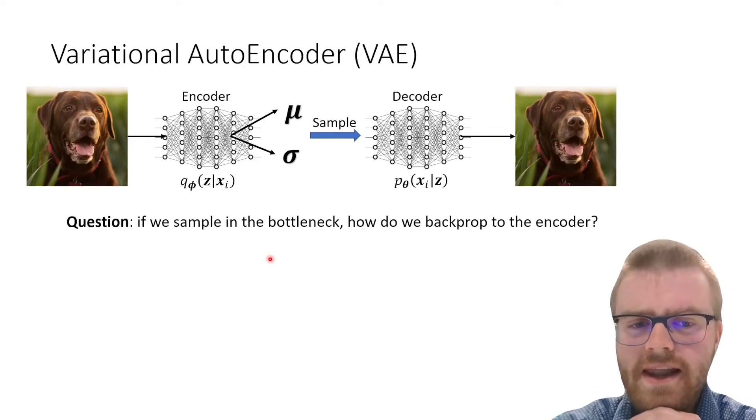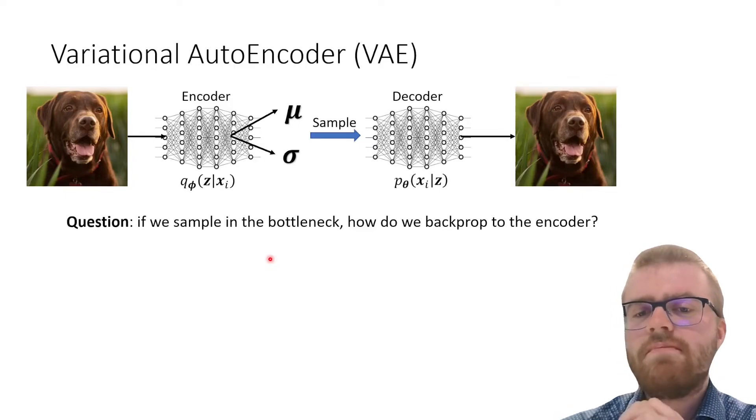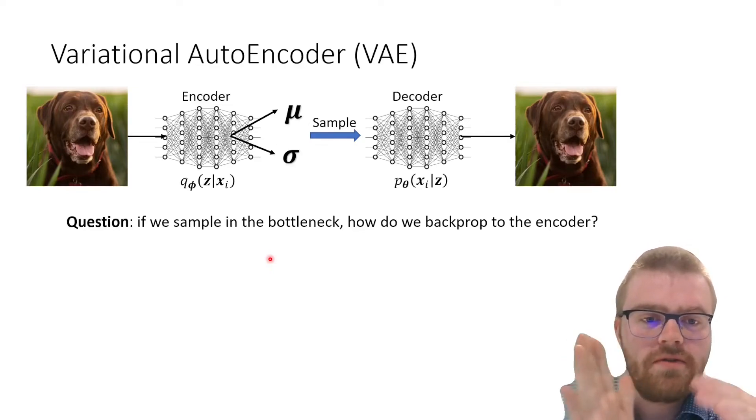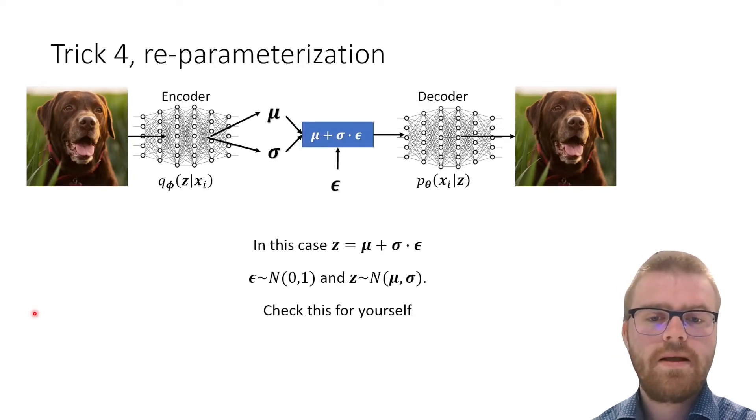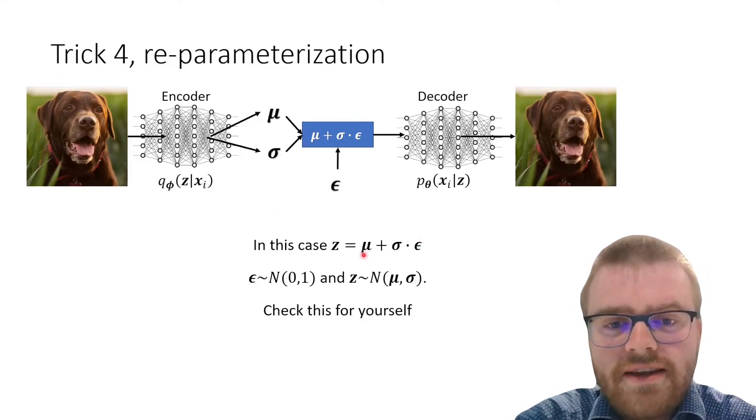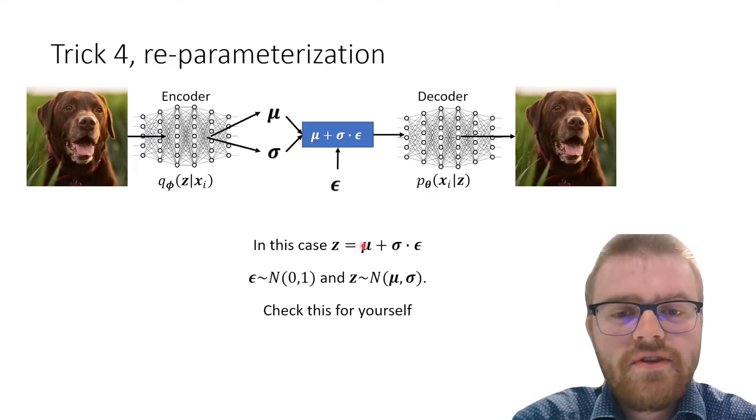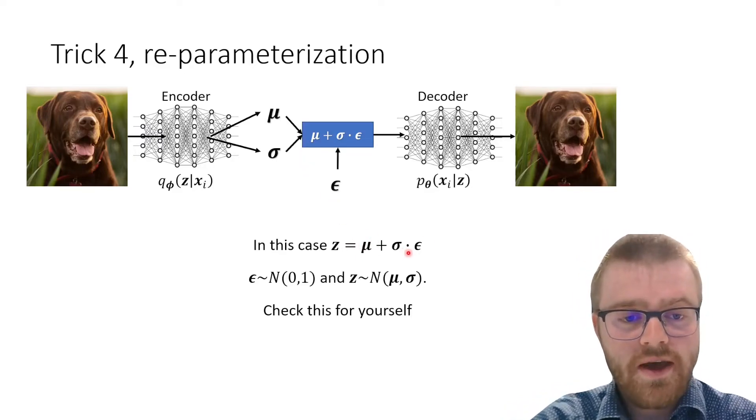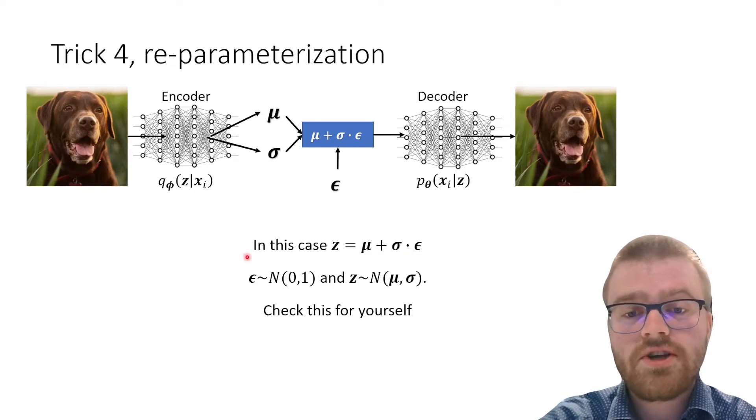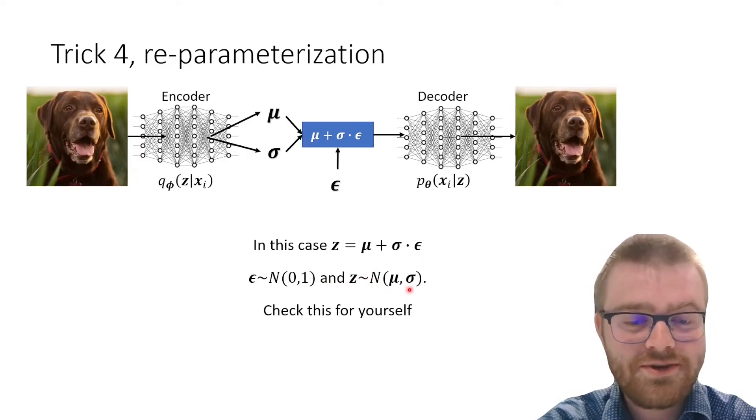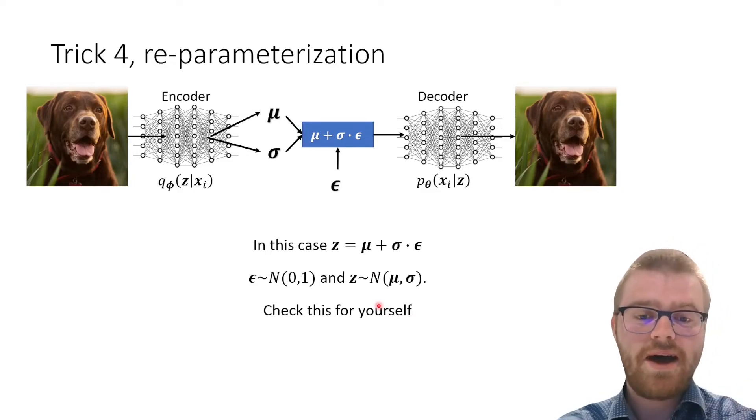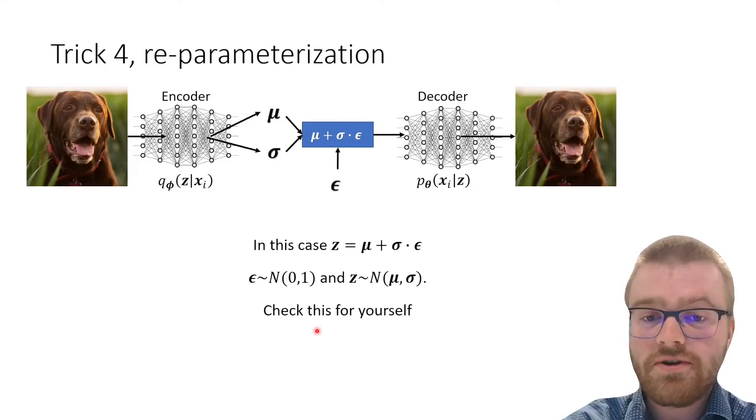The last question that remains to be answered is: if we sample in the bottleneck, how do we backpropagate to the encoder? Sampling is not an operation which you can calculate the derivative on. The answer is we're going to reparameterize this. In this case, the latent code z is actually equal to μ plus σ times ε, and ε is true random noise where we sample ε from zero and one. Now z will actually follow this normal distribution with mean μ and variance σ. I would say check this for yourself—it's actually a very good exercise.